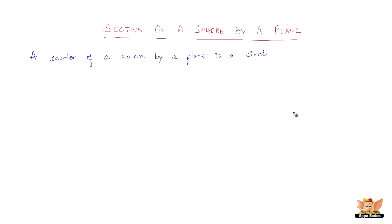In this video, let us learn about the section of a sphere by a plane. Any section of a sphere by a plane is called a circle. But the plane through the center gives the largest circular section of the sphere. We are talking about any section — any section of a sphere by a plane is a circle.